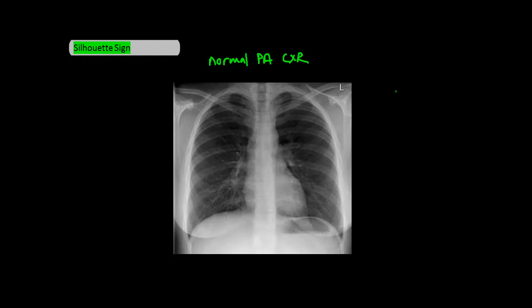Before we start talking about what the silhouette sign is, it's important for us to first understand a little bit about what X-ray images represent. The image that you see on an X-ray film is the product of differences in densities. In other words, the contrast between tissues of different densities is what produces the lines and borders on X-ray.